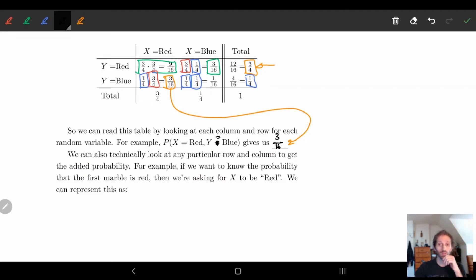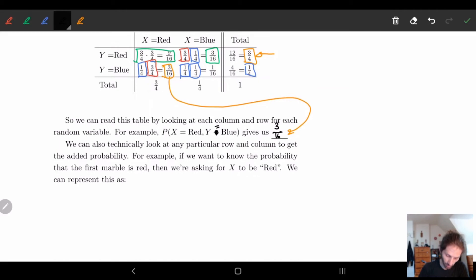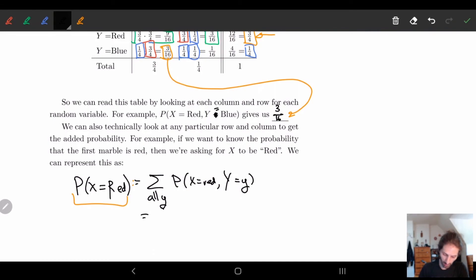And like I was saying, we can also look at each individual row. Remember how we were kind of saying, I can represent this as, let's do a column first. So we'll say x is equal to red. What's the probability that x is red? Well, in this case, what we want is, let's just go through all the different y's. So let's sum up over all the y, and we look at x is equal to red and y is equal to y. And that's basically what we have. If we sum this up, that'll tell me exactly what the chance of getting x to be red is.